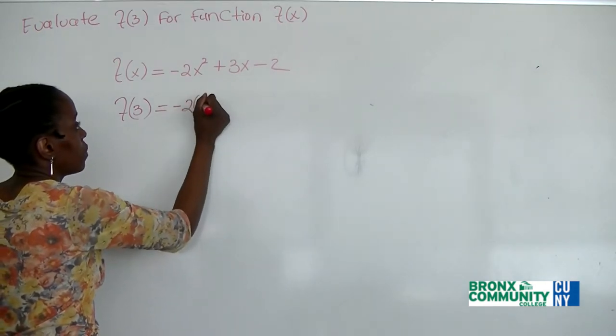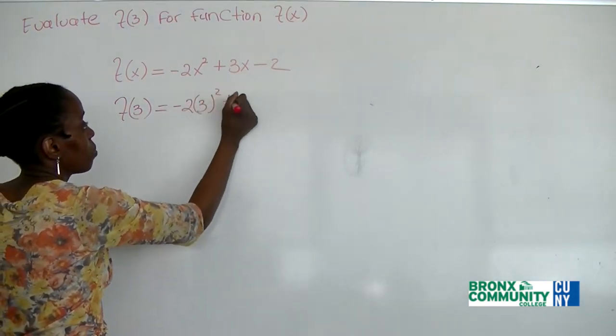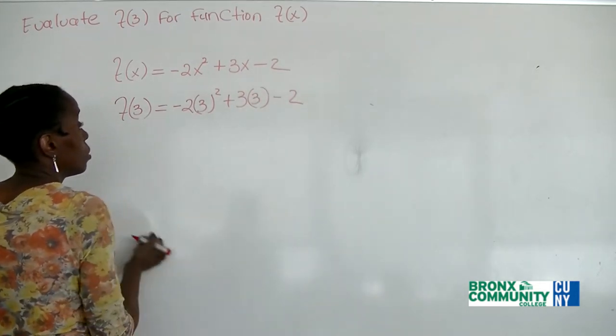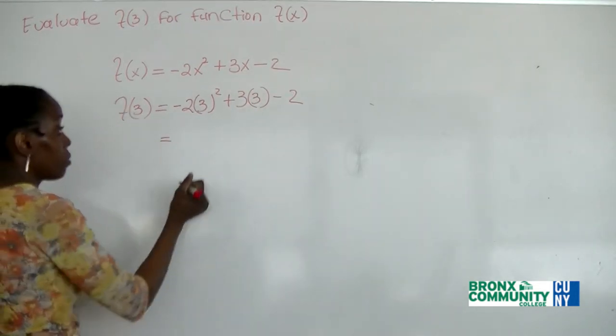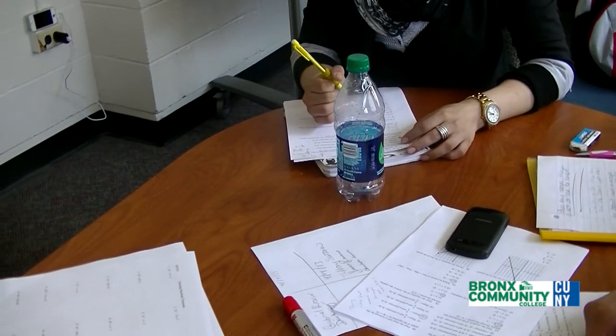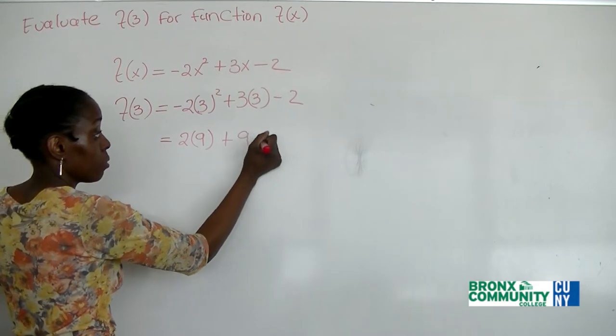Minus 2 times 3 squared plus 3 times 3 minus 2. What do we have? We have 2 times 9 plus 9 minus 2.